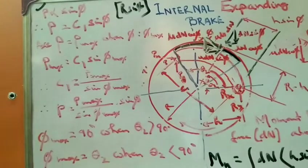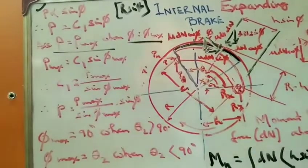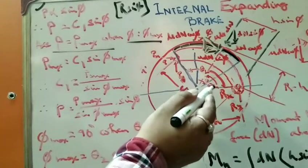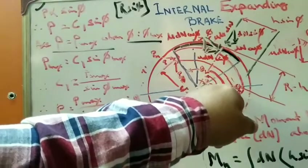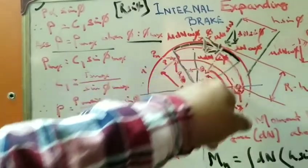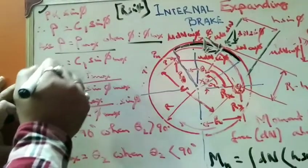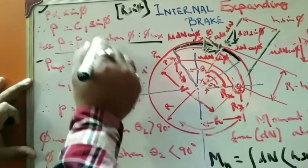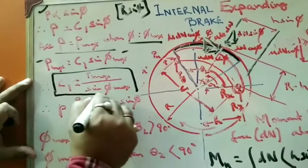To find the value of C1, we use boundary conditions. Assuming that when P equals P_max, phi equals phi_max — that is, when the pressure is maximum, the angle phi formed by the element from the axis is phi_max. Putting this into the equation: P_max equals C1 times sin(phi_max), so C1 equals P_max divided by sin(phi_max). Substituting back, we get the generalized equation: P equals (P_max / sin(phi_max)) times sin(phi).